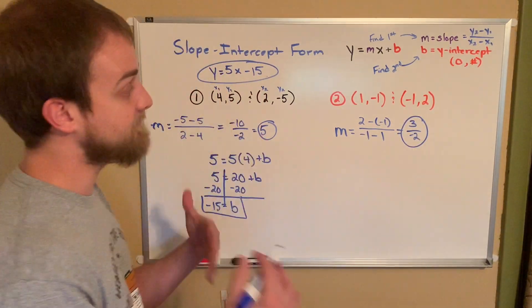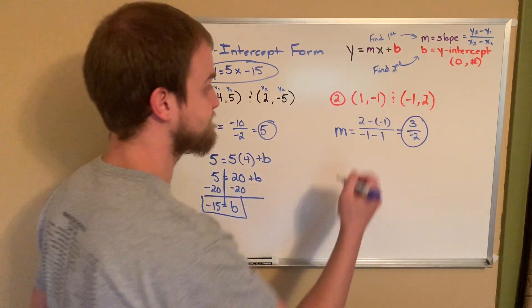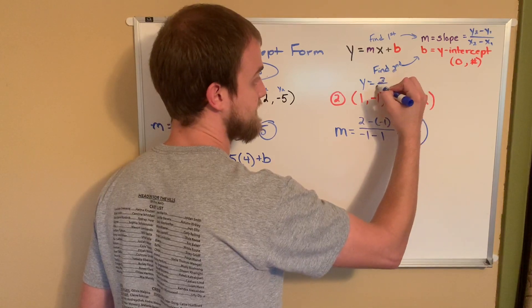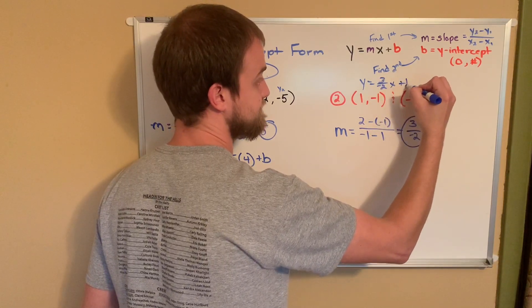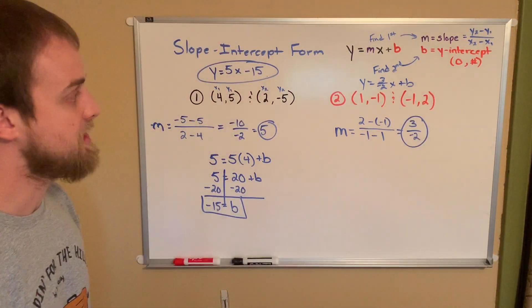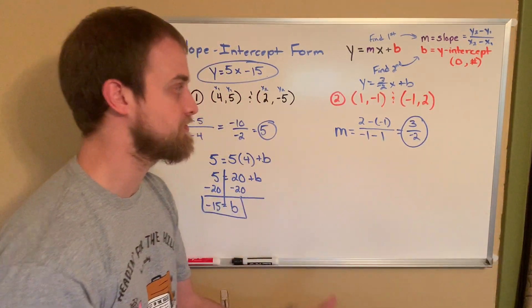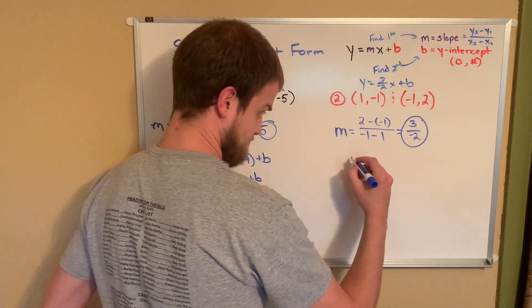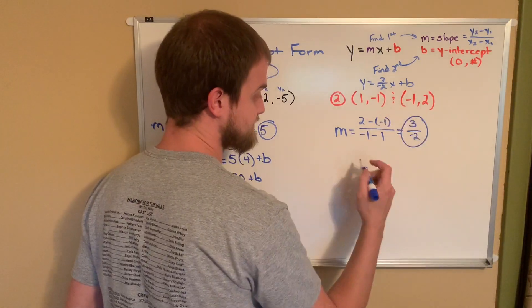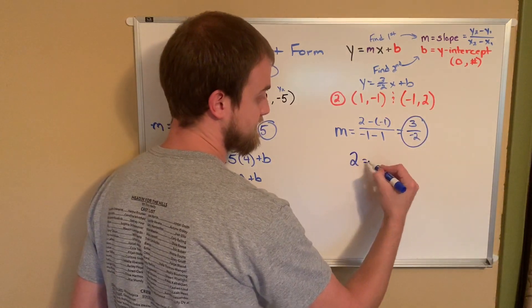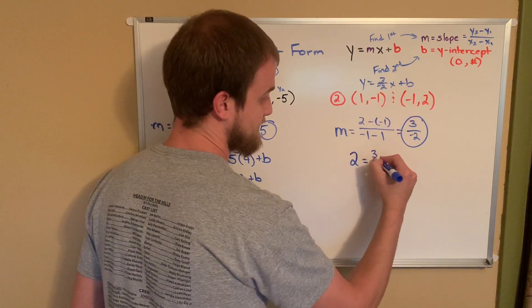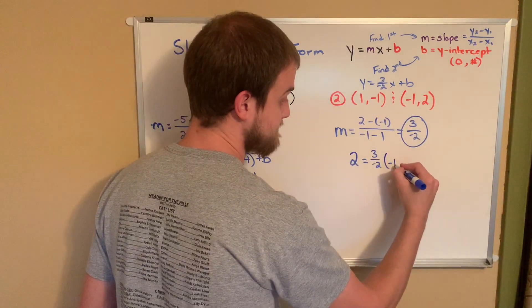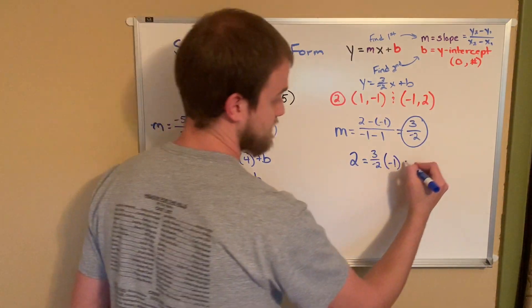But let's find b now. We have our m, so let's find our b. y equals 3 over negative 2, x plus b. I'm ready to start solving. And again, remember, I can use either ordered pair. So how about for this one I use the second one. My y value of my second ordered pair is 2. So I'll go 2 equals 3 over negative 2. My x value is negative 1 plus b.